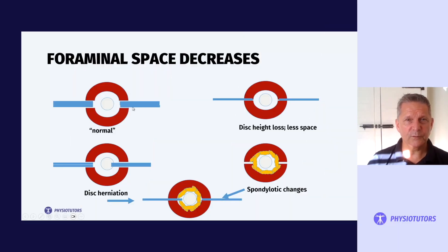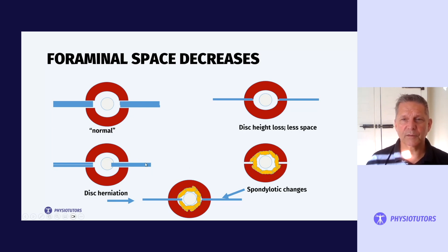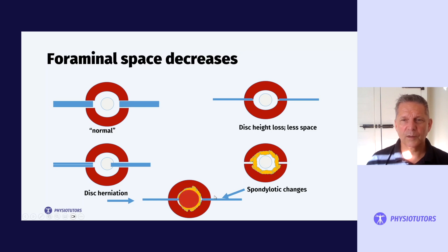Looking at it from a side view, in the top left picture you'd see a normal neural foramen with intervertebral discs and the nerve root in the middle — it has lots of space. On the top right, as disc height is lost and gets smaller, there is less space for that nerve root. If spondylotic changes also appear at the same level, there's even less space. Disc herniations will compress that nerve root, and continuing spondylotic changes as they grow may eventually lead to nerve root compression as well, resulting in that irritated, inflamed, and compressed nerve root.